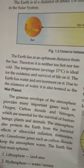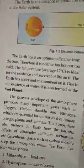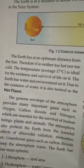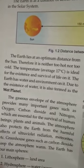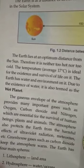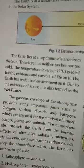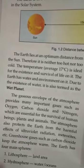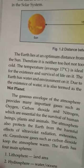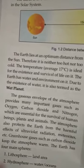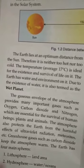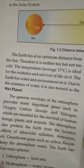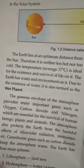The earth is not very far away from the Sun, nor very close to it. The average temperature of the earth is around 17 degrees Celsius, and it is believed that this is the average temperature required for the existence of life on a planet. The second reason is the availability of water. The earth is also known as the blue planet or wet planet because of the existence of water.